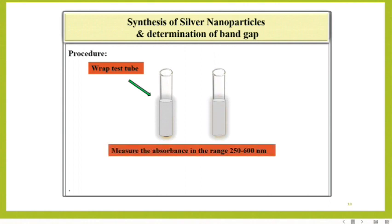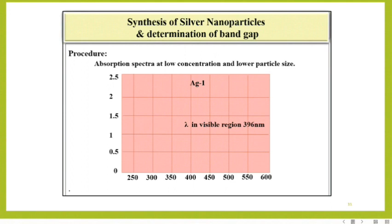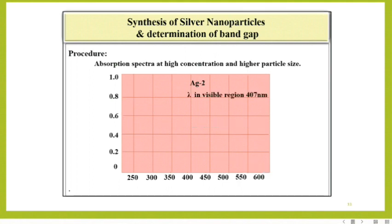Measure the absorbance in the range between 250 to 600 nanometers. Draw the graph for absorption spectra at low concentration and lower particle size — lambda in the visible region is 396 nanometers. Then draw the absorption spectra at higher concentration and higher particle size — lambda in the visible region is 407 nanometers.